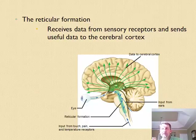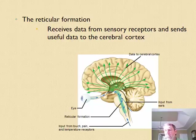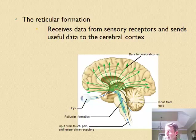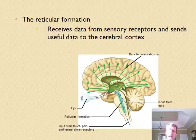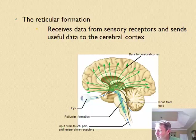One last thing about the brain: there must be a major stream of information coming in to keep us conscious. This is called the reticular formation, or reticular activating system — basically the line of information that keeps our brain active and keeps us conscious.